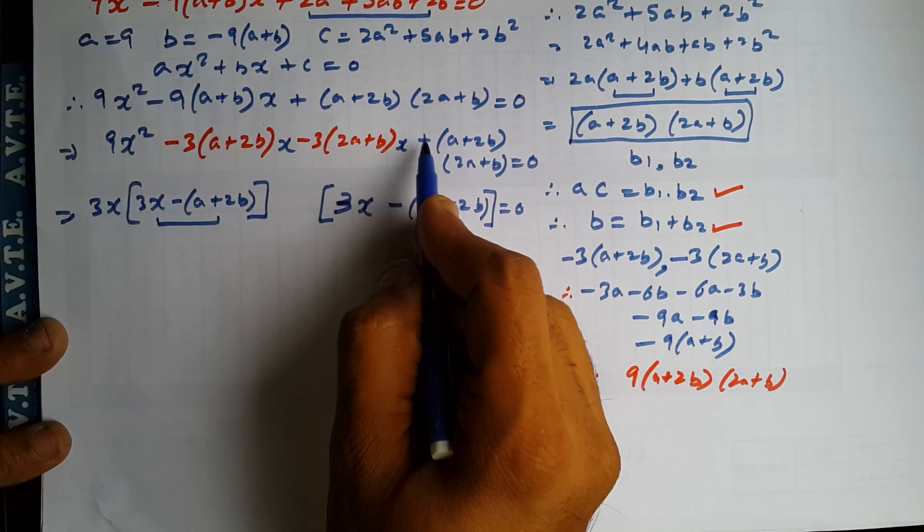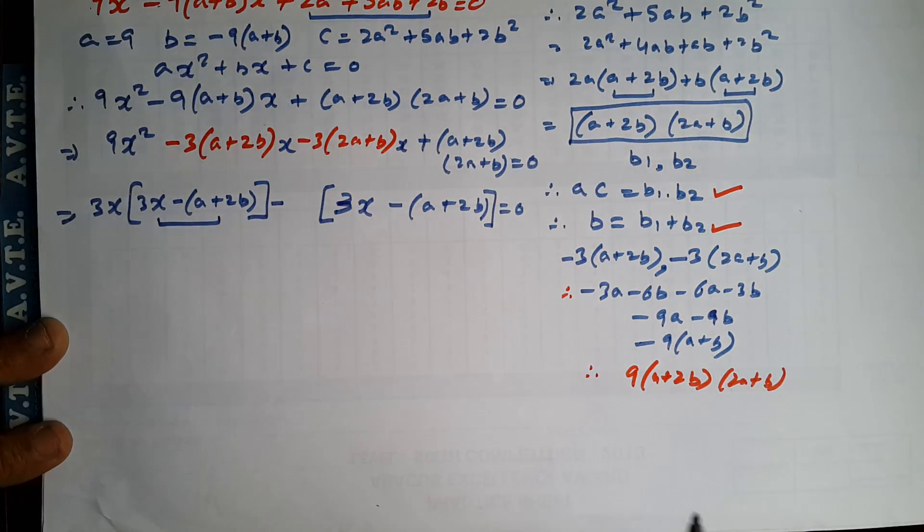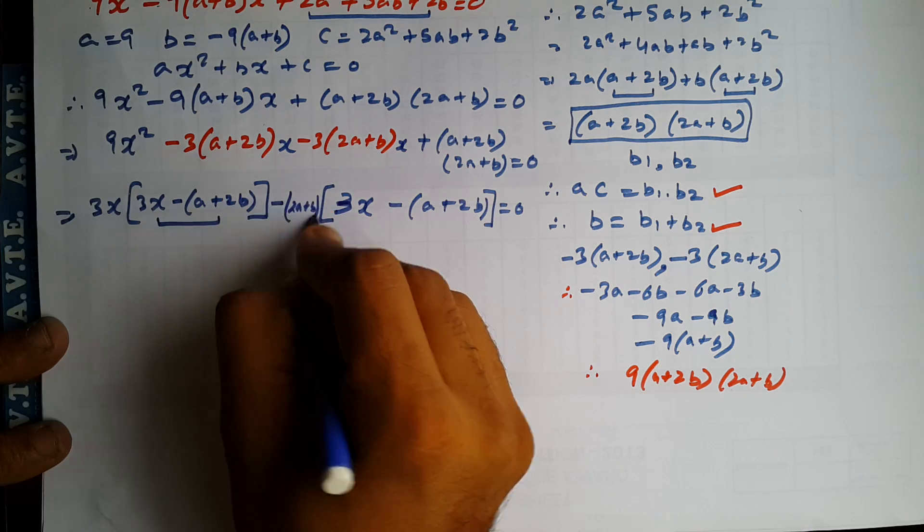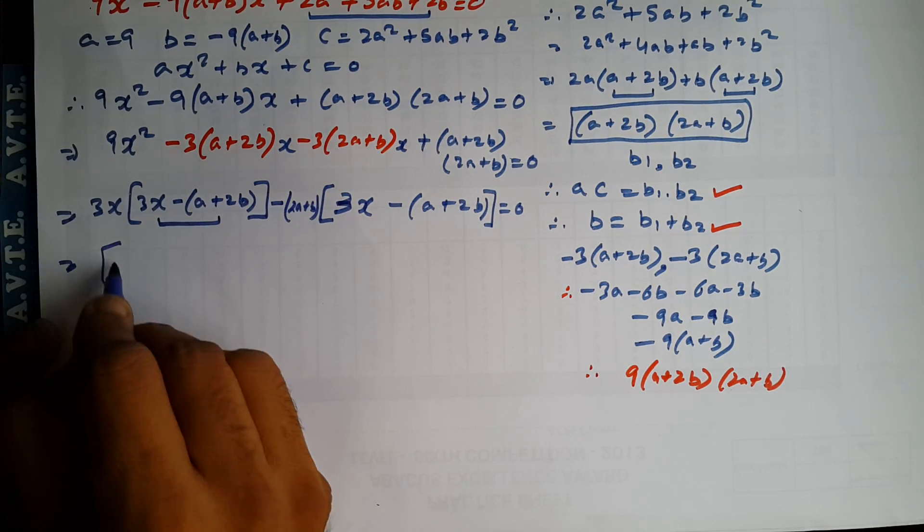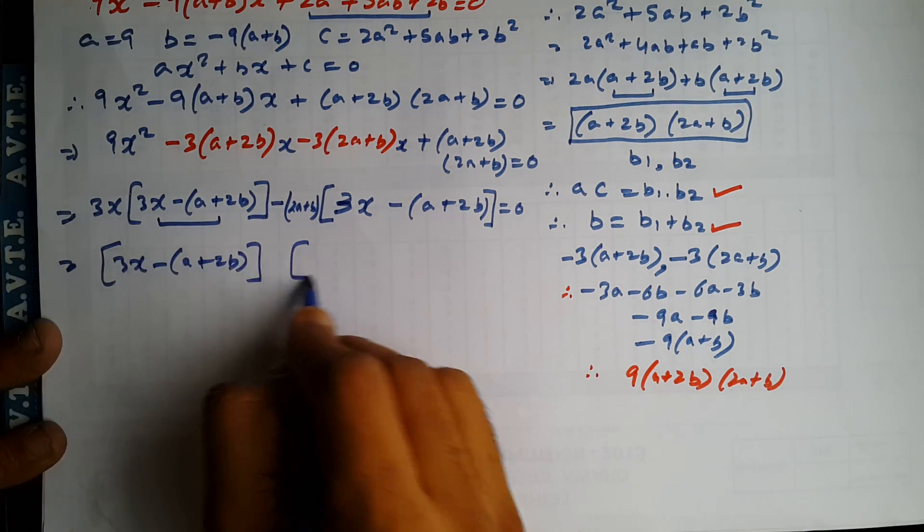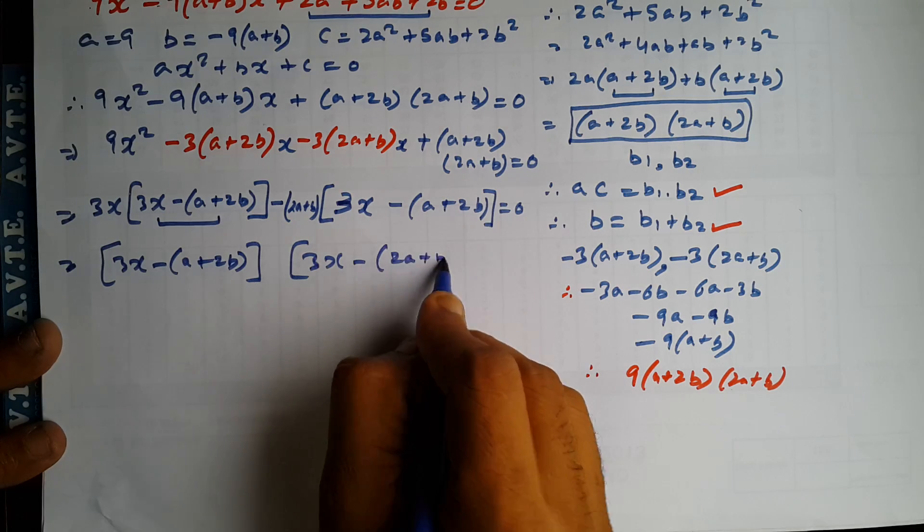So A plus 2B will cancel. And plus into minus is minus. And you're left with 2A plus B. So your first factor is 3X minus A plus 2B. And your second factor is 3X minus 2A plus B.